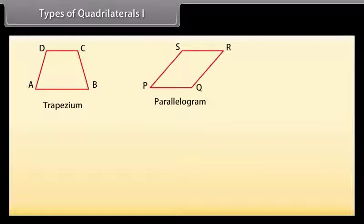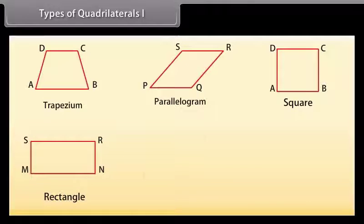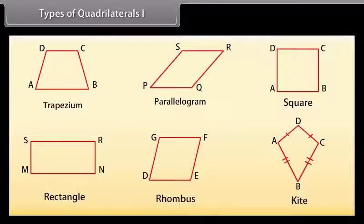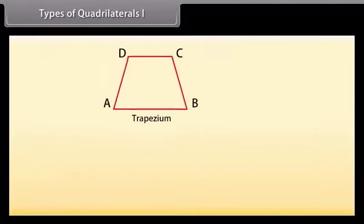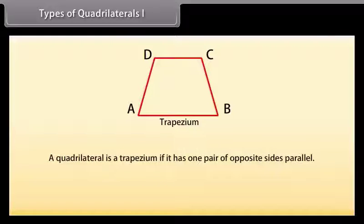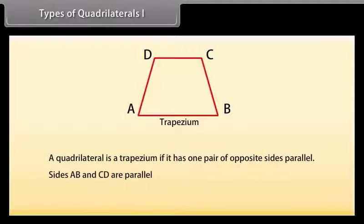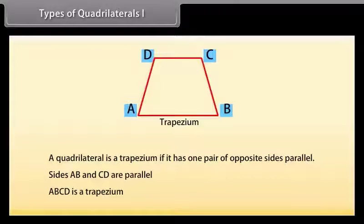Types of quadrilaterals: There are different types of quadrilaterals like trapezium, parallelogram, square, rectangle, rhombus, and kite. Look at these figures — we will go through them one by one. First is trapezium: a quadrilateral is a trapezium if it has one pair of opposite sides parallel. Here opposite sides AB and CD are parallel, so ABCD is a trapezium.